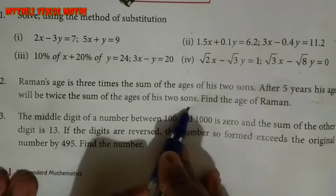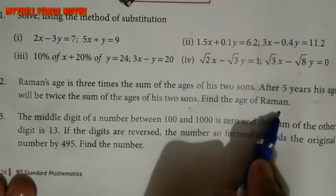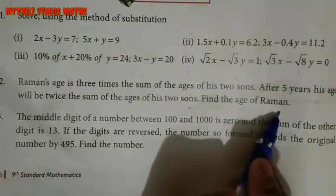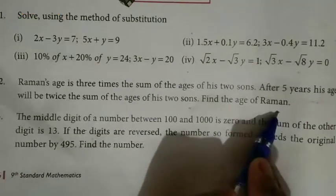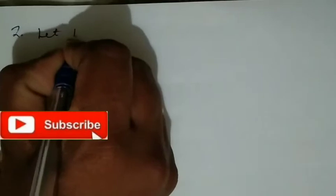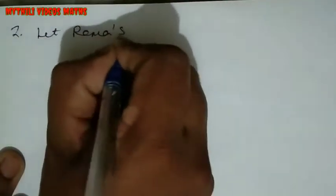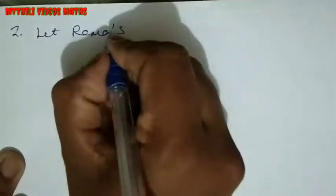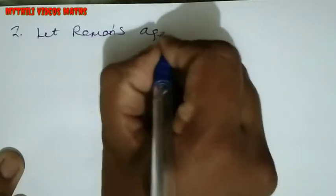Find the age of Raman. So we start solving. Let Raman's present age be X and the sum of his two sons' ages be Y.